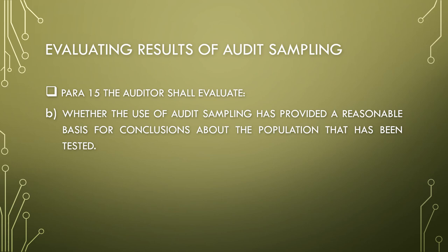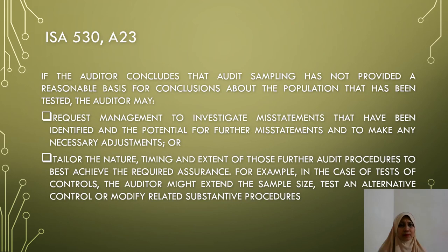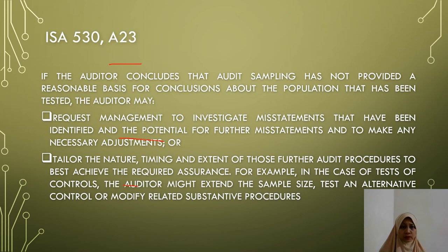Paragraph 15 further states the auditor shall evaluate whether the use of audit sampling has provided a reasonable basis for conclusions about the population tested. Under A23, if the auditor concludes that audit sampling has not provided a reasonable basis, the auditor may request management to investigate misstatements identified and the potential for further misstatements and to make any necessary adjustments, or tailor the nature, timing and extent of further audit procedures to best achieve the required assurance. For example, in the case of test of controls, the auditor might extend the sample size, test an alternative control, or modify related substantive procedures, also known as test of details.